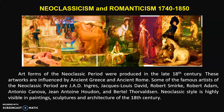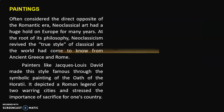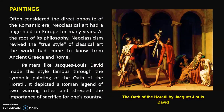Other notable artists include Jean-Antoine Houdon and Bertel Thorvaldsen. Neoclassic style is highly visible in paintings, sculptures, and architecture of the 18th century. Their paintings are often considered the direct opposite of the Romantic era. Neoclassical art had a huge hold on Europe for many years. An example of a painting you can see on the screen is the Oath of the Horatii by Jacques-Louis David. Painters like David made this style famous through its symbolic imagery.